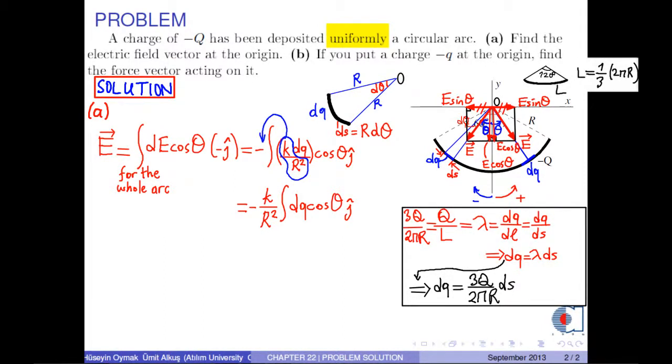From the previous figure, ds is r times dθ. Therefore, dq becomes 3q over 2 pi times dθ.